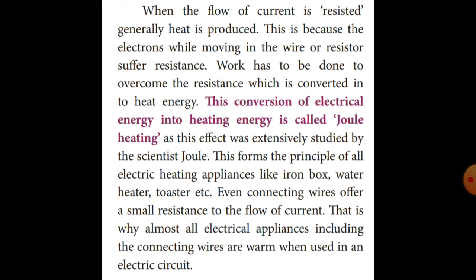This is because the electrons, while moving in the wire, suffer resistance. When electrons suffer resistance in the wire, heat is produced. Work has to be done to overcome the resistance, which is converted into heat energy. This conversion of electrical energy into heat energy is called Joule heating, as this effect was extensively studied by scientist Joule. This forms the principle of all electrical heating appliances like iron box, water heater, and toaster. Even connecting wires offer small resistance, which is why almost all electrical appliances including connecting wires become warm when used in an electrical circuit.